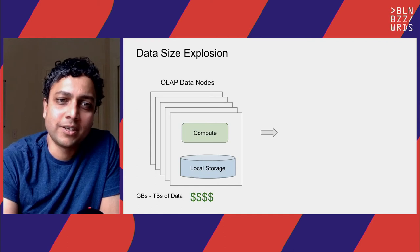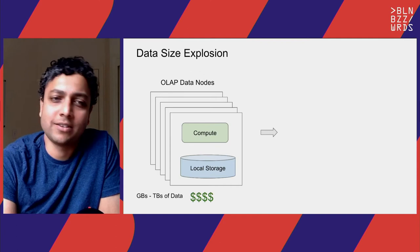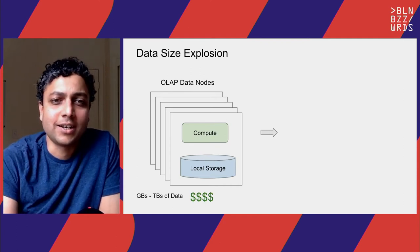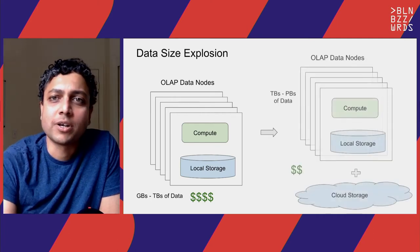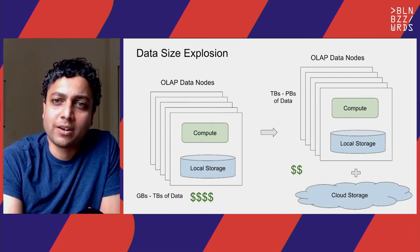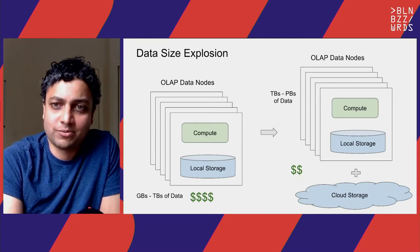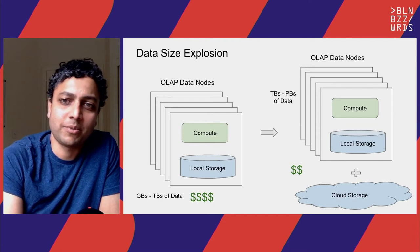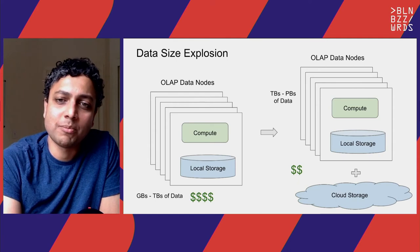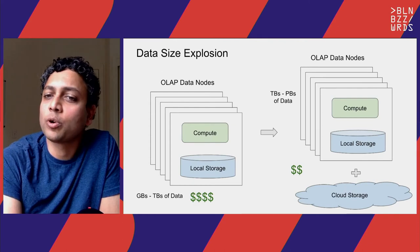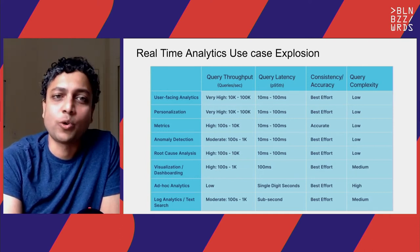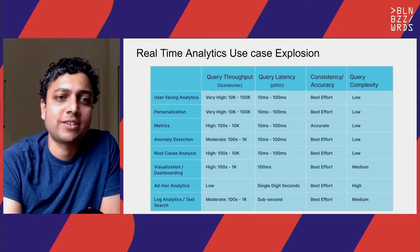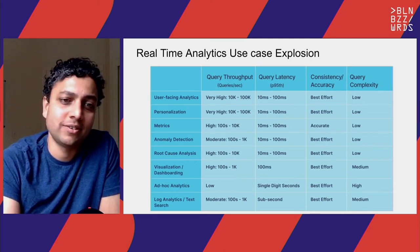A few years back, OLAP systems were expected to handle data in the range of hundreds of GB to a few terabytes, and at that scale it was okay to co-locate data with compute on the data nodes. Nowadays, OLAP systems are expected to handle very high scale — from hundreds of terabytes to even petabytes of data. At this scale, it's no longer cost-efficient to store everything locally. What we need is a hybrid architecture where important data can still be local, but most historical or less frequently queried data can be stored remotely on cheap cloud storage.